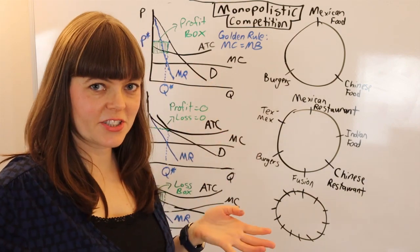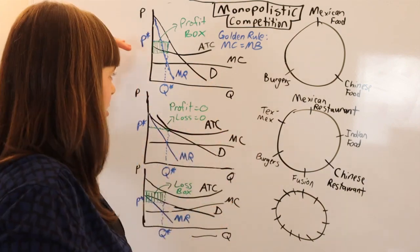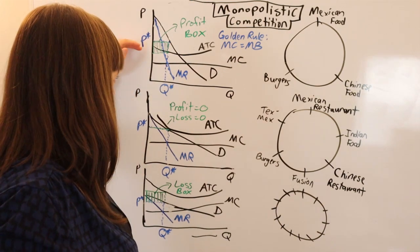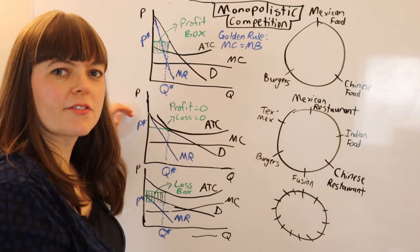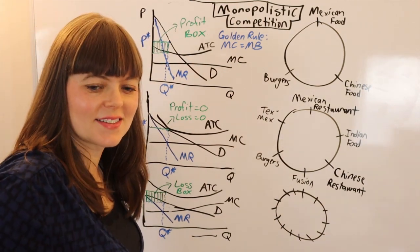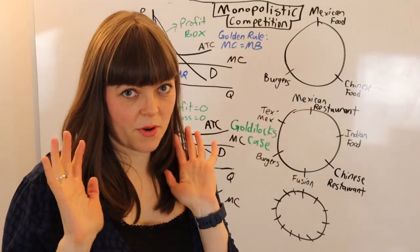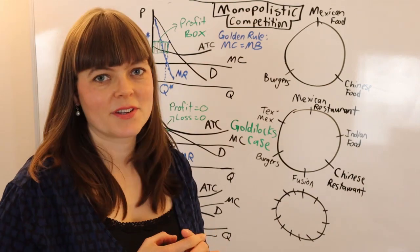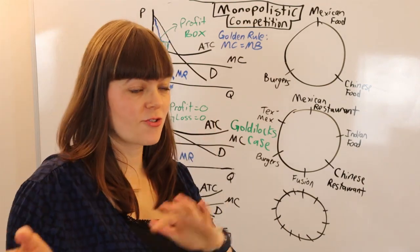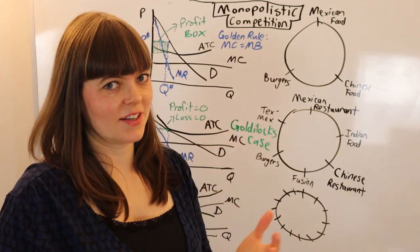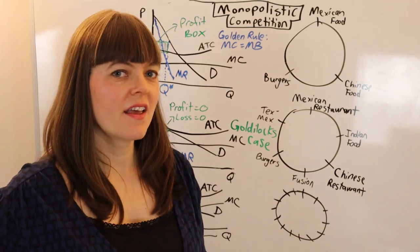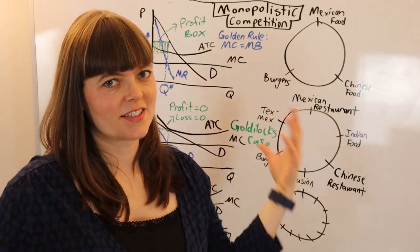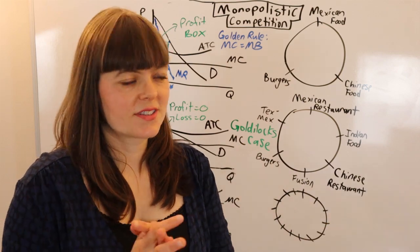So this is monopolistic competition. We've got our three cases: too many firms, too few firms, and just the right amount of firms in the Goldilocks case. We use a monopoly model for monopolistic competition, but there's free entry and exit, which leads to zero profits in the long run. The elasticity of demand is more elastic since there are substitutes in monopolistic competition, whereas there are not with monopoly.